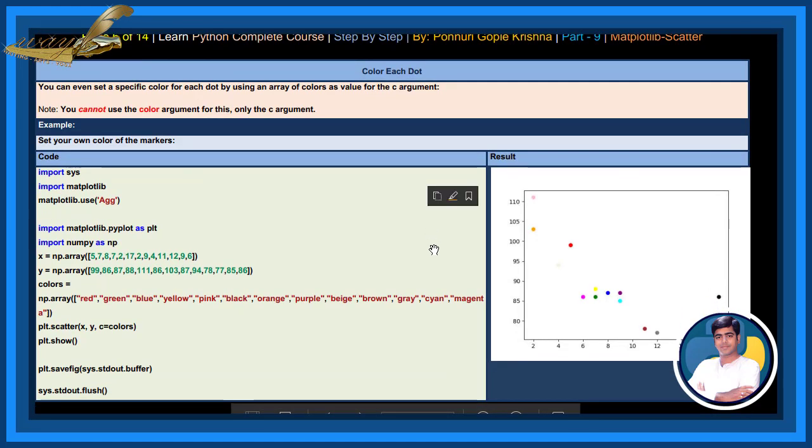Color each dot. You can even set a specific color for each dot by using an array of colors as value for the C argument. You cannot use the color argument for this, only the C argument. See red, green, blue, yellow, pink, black, orange, purple, beige, brown, gray, cyan, magenta. We use it. See, all colors were printed.